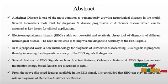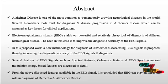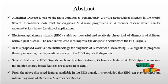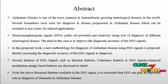Several brain biomarker tools exist in the diagnosis and disease prognosis of Alzheimer's, which are key issues in clinical applications. The EEG signal provides a powerful and relatively cheap tool for diagnosis of different neurological diseases. In this proposed work, a new methodology for diagnosis of Alzheimer's using the EEG signal is proposed to improve diagnosis accuracy.